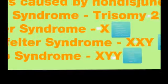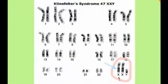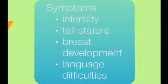Klinefelter syndrome is a disorder that males have, symbolized as XXY — although they are male because they have an X and a Y, they have an extra X chromosome. All chromosomes appear as normal pairs until you get to the end where there are two X's and a Y. Symptoms include infertility. Where girls with Turner syndrome are short, boys with Klinefelter are tall — between 6'8" and 7' tall. They also tend to develop some breast tissue and have language difficulties.